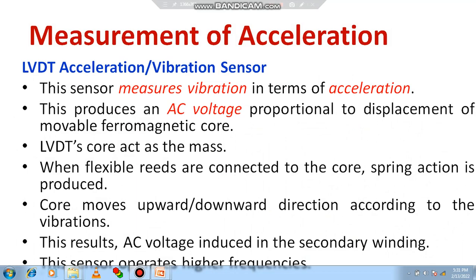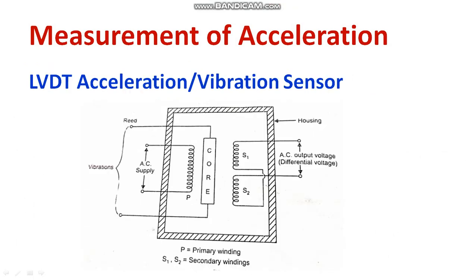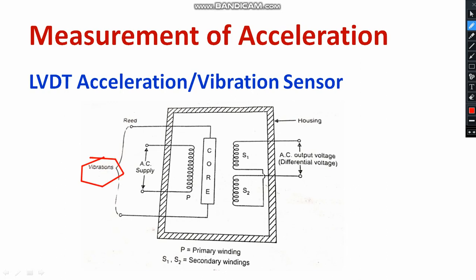Another method is the LVDT acceleration sensor. We already discussed the linear variable differential transducer — it basically operates based on the movement of the core. The core is directly connected to the mechanical object where vibration is produced. We have a primary winding and two secondary windings in series and opposite configuration. With respect to changes in the core position, the output voltage changes.